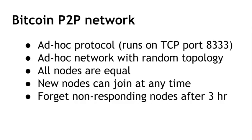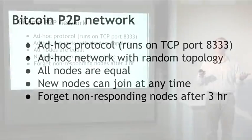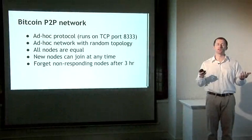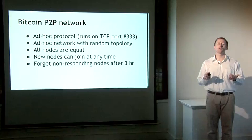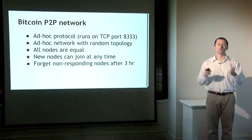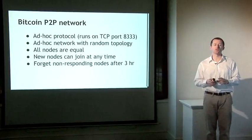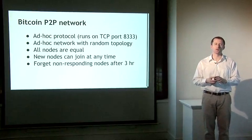It runs over TCP and has a random topology, so there are random nodes peered with random other nodes. New nodes can come at any time — you can download the Bitcoin client today, spin up your computer as a node, and you'll be a participating Bitcoin node with equal rights and capabilities as every other node on the Bitcoin network.